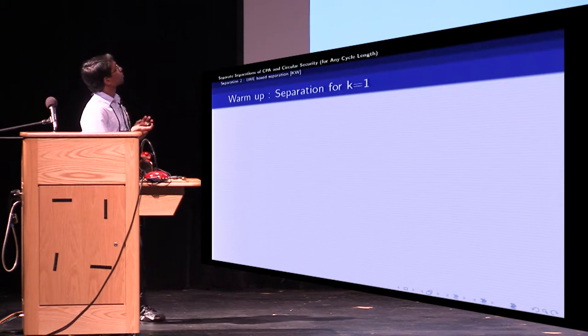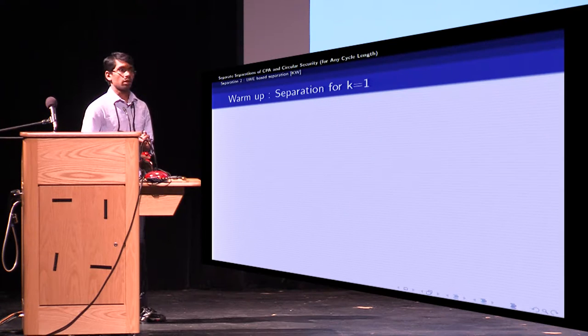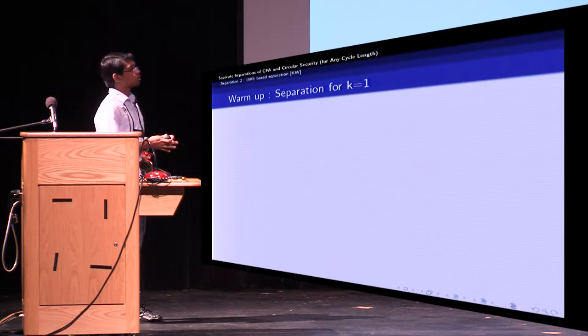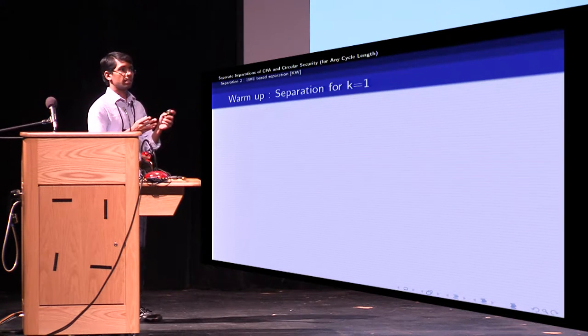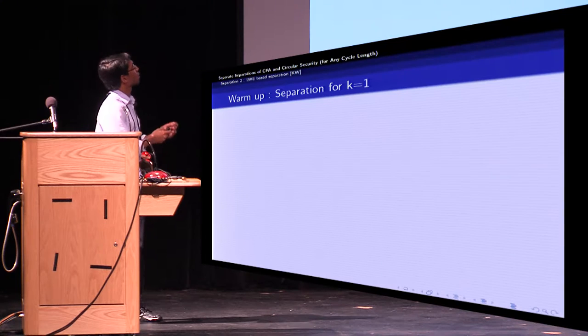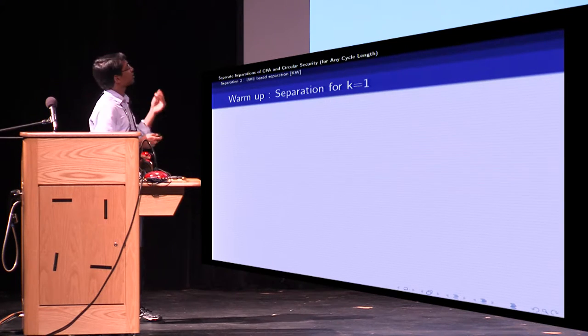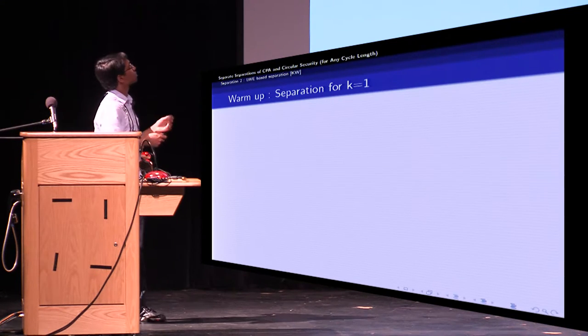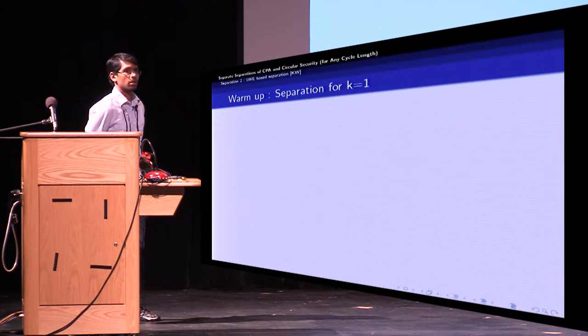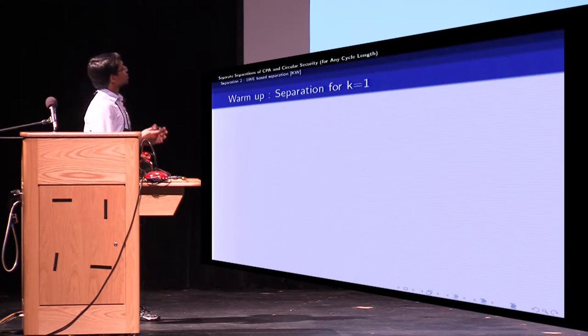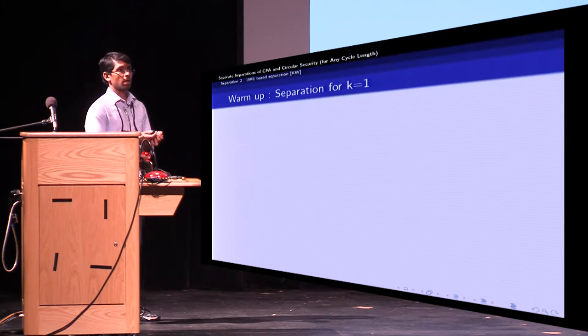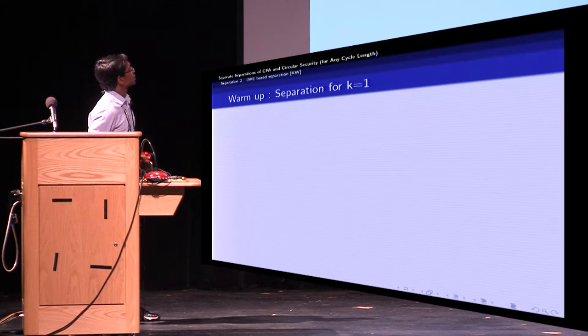So as a warm-up I'll first present a separation for K equals one. And as Naveed mentioned, separation for K equals one is pretty trivial. You can convert any CPA secure scheme into one that is still CPA secure but not one circular secure. But the reason I'm presenting this is because it has more structure and it will lead to a more general K circular secure counterexample. Okay, so we need to present three algorithms, the key generation encryption and the testing algorithm. First, the key generation.